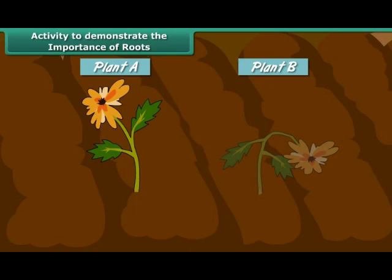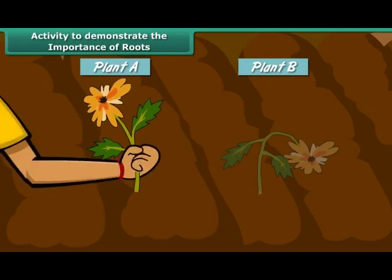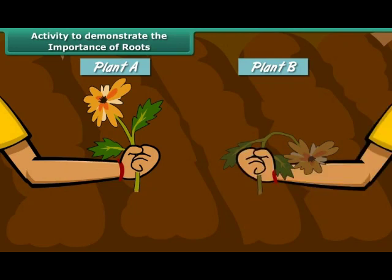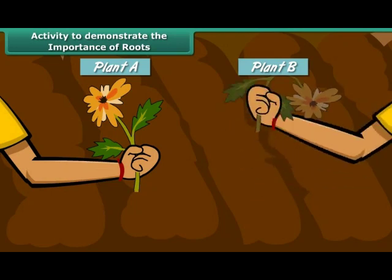This proves that roots absorb water and minerals from the soil and transport them to the other parts of the plant. Now try pulling the two plants out from the soil. Plant A is firmly attached to the soil because of its roots, so it is difficult to pull it out. However, plant B, which has no roots, comes out easily. This shows that roots anchor plants firmly in the soil.